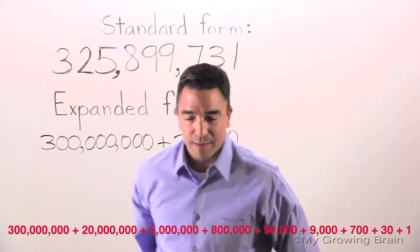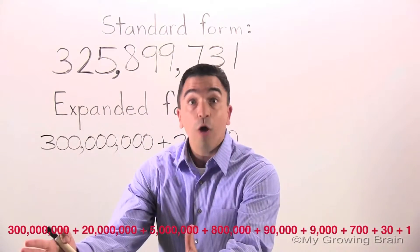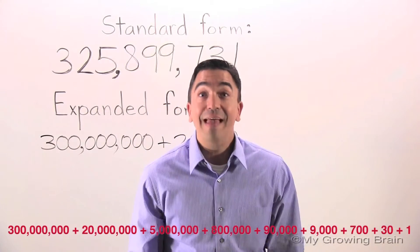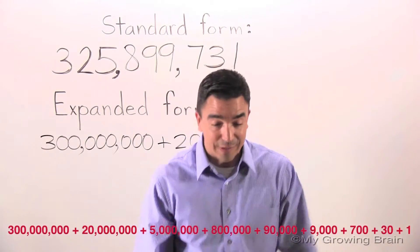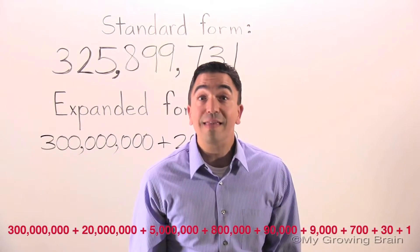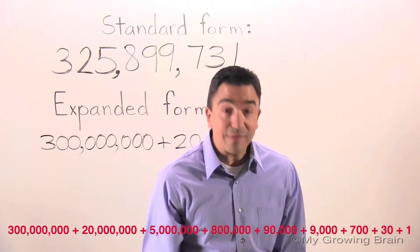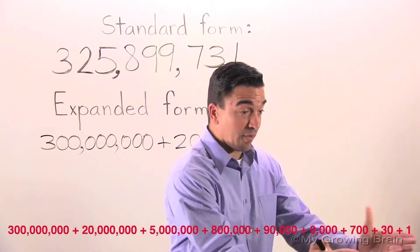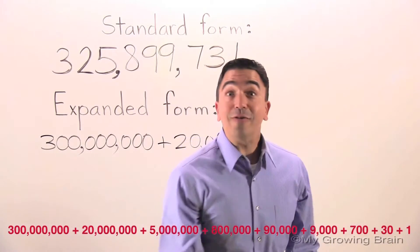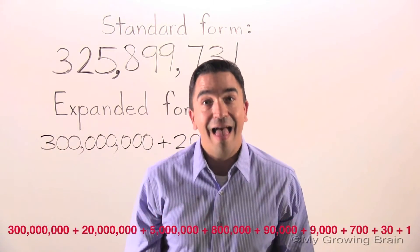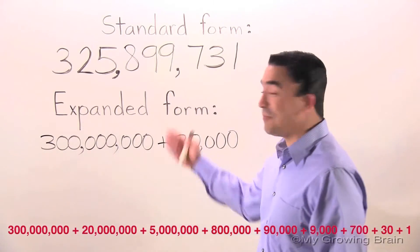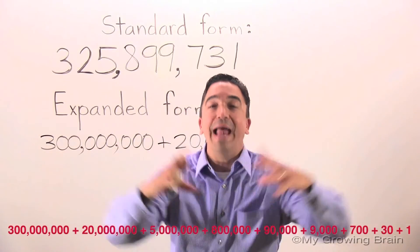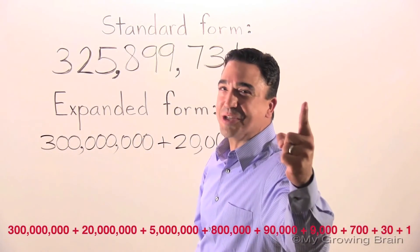300 million plus 20 million plus 5 million plus 800,000 plus 90,000 plus 9,000 plus 700 plus 30 plus 1! And that concludes our lesson on Expanded Form. Coach Mike at My Growing Brain. Challenge Yourself!